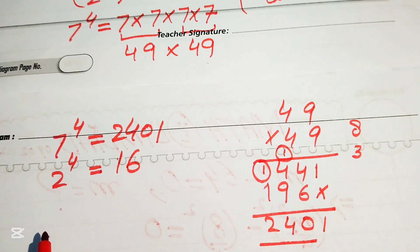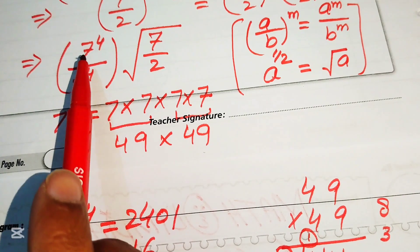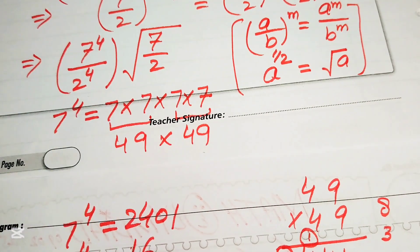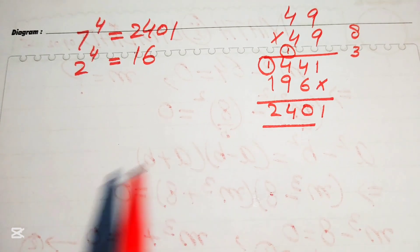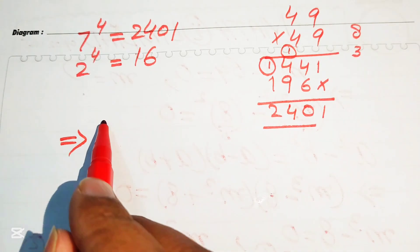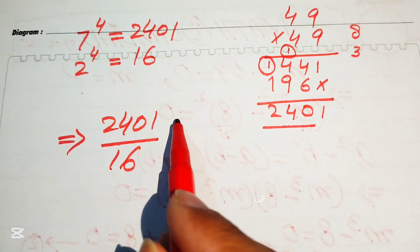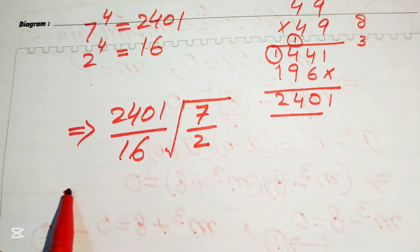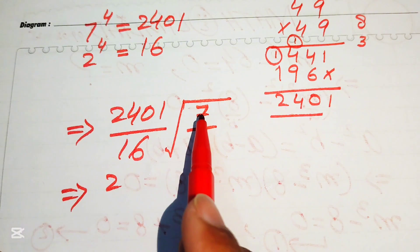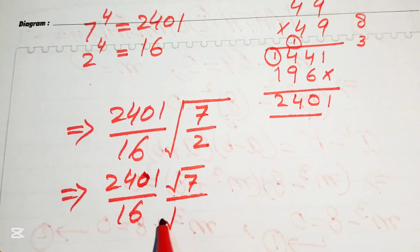We now replace these values in the expression. We replace 7 to the power of 4 with 2401 and 2 to the power of 4 with 16. After replacing these values, our algebraic expression is written as 2401 divided by 16, multiplied by the square root of 7 over 2.